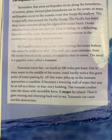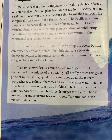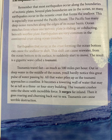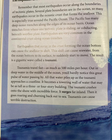Remember that most earthquakes occur along the boundaries of tectonic plates. Several plate boundaries are in the ocean, so many earthquakes occur in the oceanic crust that forms the sea floor. This is especially true around the Pacific Ocean, which has many deep ocean trenches along the edges of its ocean basin. Ocean trenches form where one tectonic plate is subducting beneath another. Earthquakes that occur in the oceanic crust can cause the sea floor to shift, which can cause seawater to suddenly start moving, resulting in a gigantic wave called a tsunami.